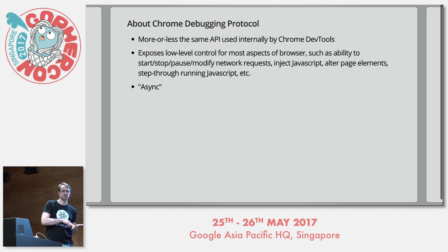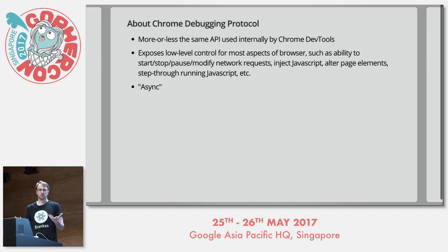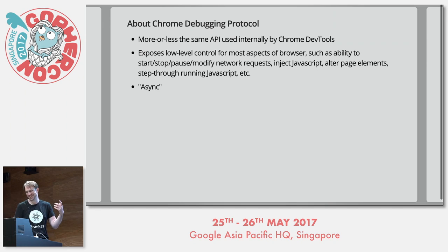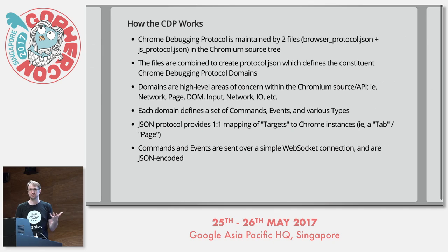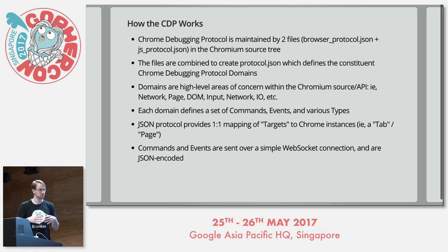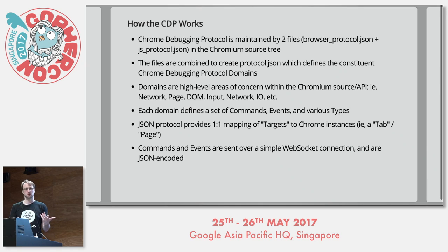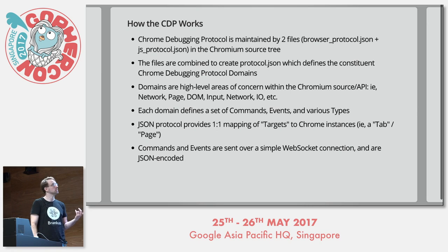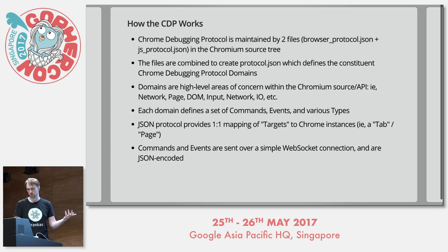To understand ChromeDP, you need to understand how it works with Chrome. Chrome exposes the debugging protocol through an async WebSocket-based protocol that is quite frustrating to use. Because of the nature of the Chromium source tree, it's a constantly changing target — which is one reason why other approaches to integrating Go directly with Chrome haven't been done well, since most code has been manually written rather than generated from the protocol.json file. The Chrome Debugging Protocol is based on two JSON files in the Chromium source tree: browser_protocol and js_protocol.